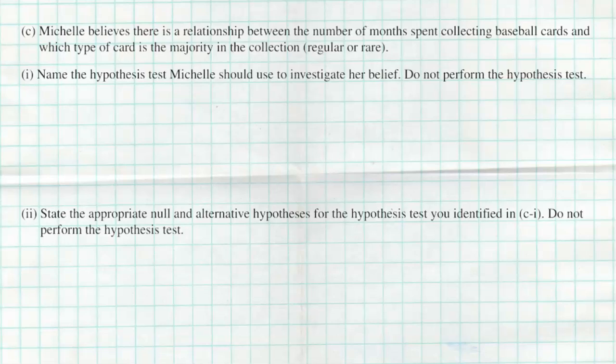The next question says Michelle believes there is a relationship between the number of months spent collecting baseball cards and which type of card is the majority in the collection, regular or rare. Name the hypothesis test Michelle should use to investigate her belief — do not perform the test — and state the null and alternative hypotheses. We're looking at a two-way table for categorical data: whether you collect rare or regular cards, and how long you've been collecting in these different categories. Anytime we see that, we're thinking of a chi-squared test. Chi-squared tests are for categorical data.